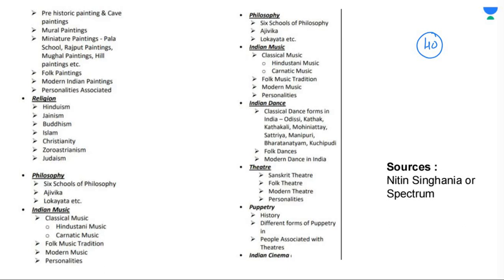For mains GS Paper 1, map-based questions are not asked — that's asked in history optional, so don't waste your time there. In the religion section, whatever empires you are studying, you need to know which religion was followed — Buddhism, Jainism, Christianity, Islam, or Hinduism. In prelims, a one-liner question can come: for example, which religion was prominent in the Chola Empire or Vijayanagara Empire? In mains, this level of detail is not required.